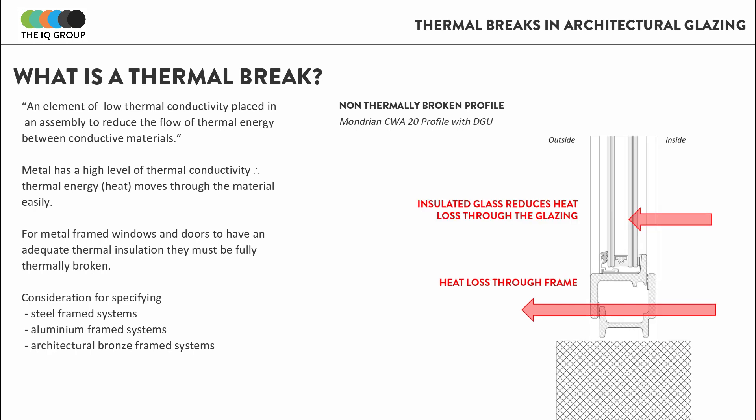Some traditional metal frames will allow for the use of double glazing within the profile. This will reduce the heat loss through the glass, but it doesn't eliminate the heat loss that you get through the non-thermally broken frame, as you can see here.